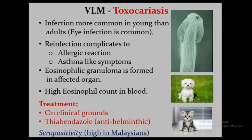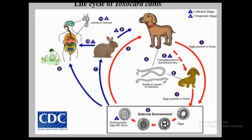Toxocariasis is most commonly found in the eye but can affect other organs as well. It produces allergic reactions and sometimes asthma-like reactions — similar to Löffler's syndrome seen with Ascaris. Eosinophilic granuloma forms in the affected organ, and high eosinophil count is expected in the blood. Treatment is on clinical grounds but anti-helminthic drugs like thiabendazole help. There is high seropositivity in the Malaysian population because they have been infected with this zoonotic nematode Ascaris and have developed antibodies.